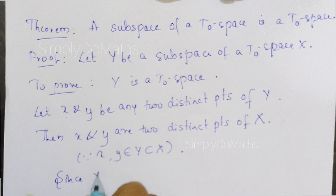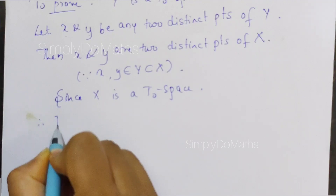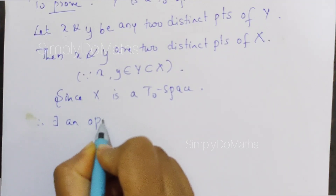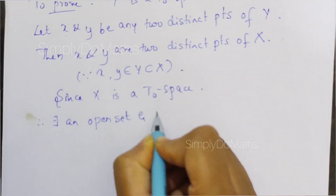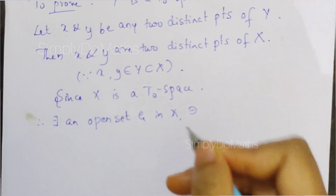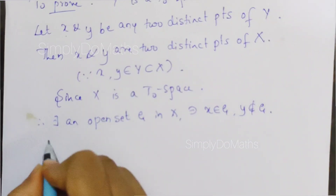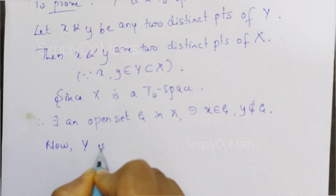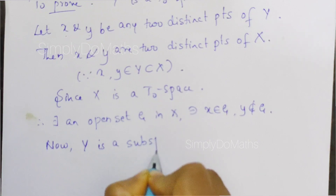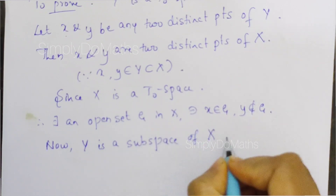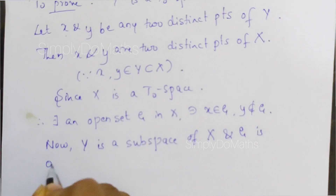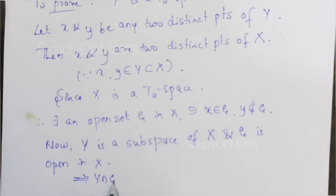As you know, X is a T0 space. Therefore, there exists an open set — say G in X — such that x belongs to G and y does not belong to G. Now, Y is a subspace of X and G is open in X. This implies Y intersection G is open in Y.